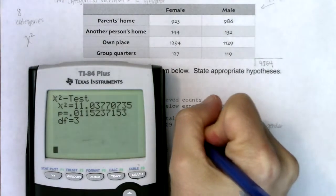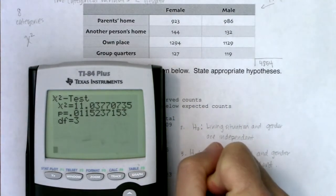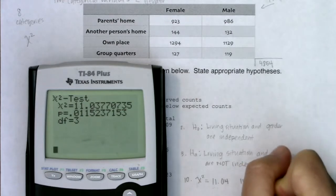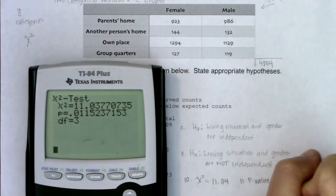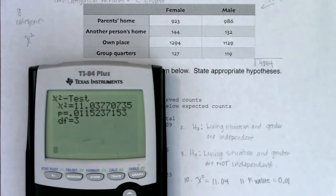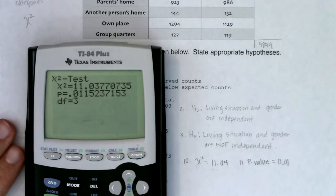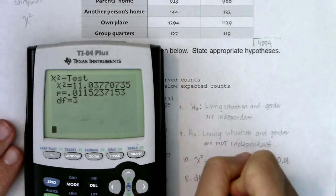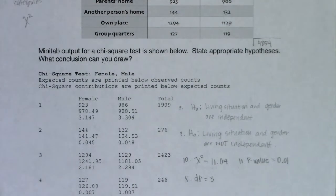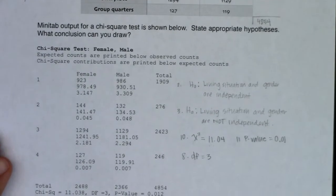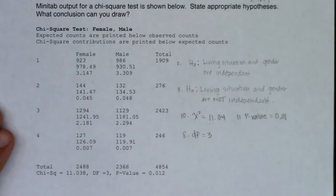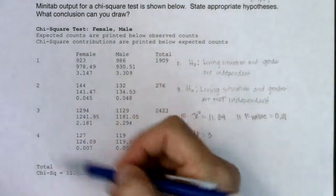So recording the calculator results: chi-squared test statistic of 11.04, p-value of 0.01, and degrees of freedom of 3. Now I want to focus on what this Minitab is saying, and let's see if we can draw the same conclusion or see where this information is coming from.